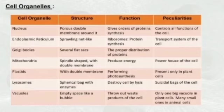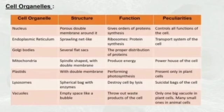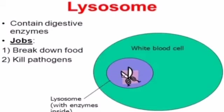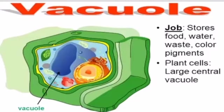The nucleus is the important organelle of the cell. There is a porous double membrane around it. The nucleus controls all functions of the cell. The endoplasmic reticulum is a spiraling net-like organelle whose function is to make necessary changes in the proteins produced by ribosomes and send them to the golgi bodies. The golgi bodies are made up of several flat sacs and their function is proper distribution of protein. Mitochondria produce energy and are therefore called the powerhouse of the cell. Lysosomes are spherical bags with enzymes whose function is to destroy cells by lysis — they are called the suicidal bags of the cell. Chloroplasts in the plant cell carry out the function of photosynthesis. Vacuoles help to throw out waste products of the cell. Vacuoles in animal cells are small, whereas there is only one large vacuole in a plant cell.